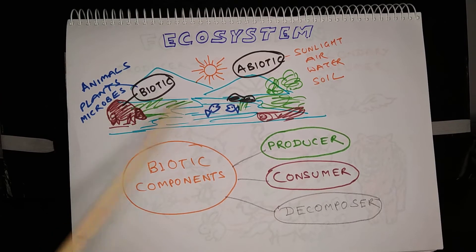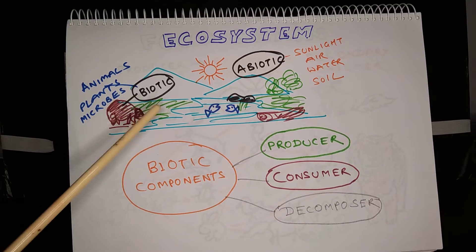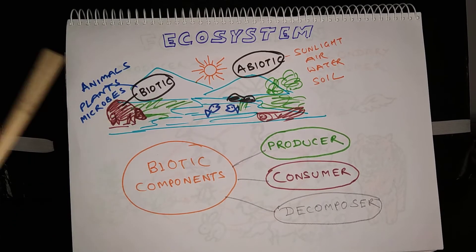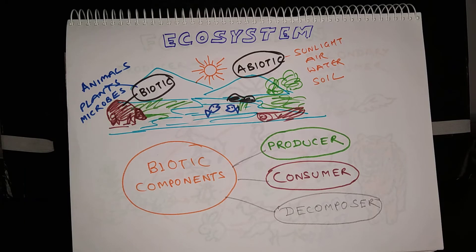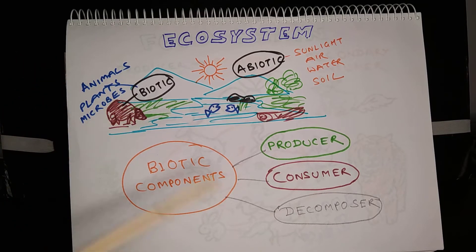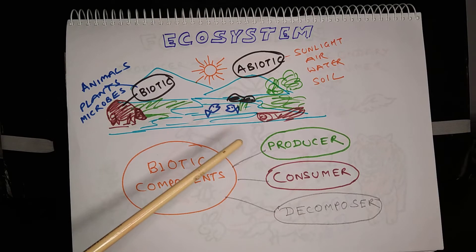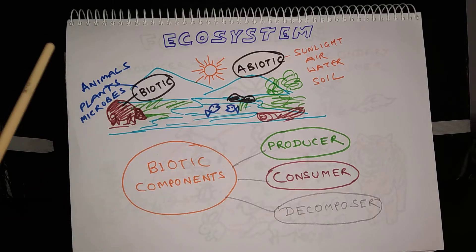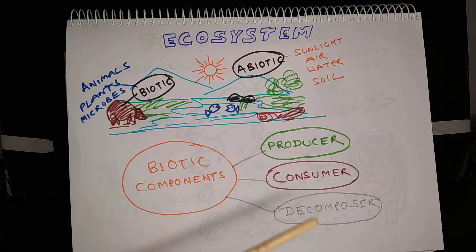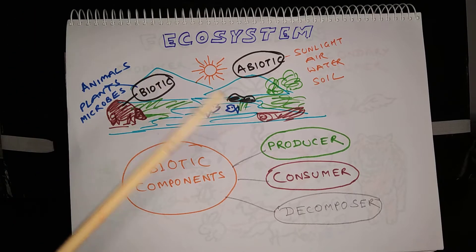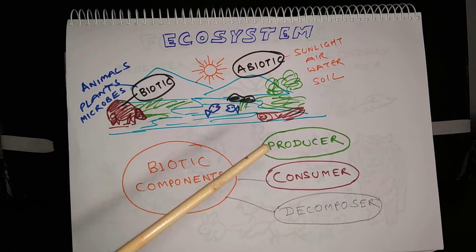There is a river or pond, then there is some grassland, there are some animals and plants. These are the living beings. Then there is sunlight, air, water, soil — these are non-living things. An ecosystem has two components: biotic component and abiotic component.